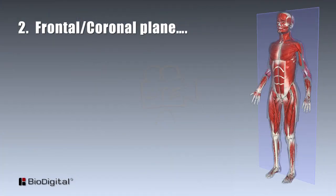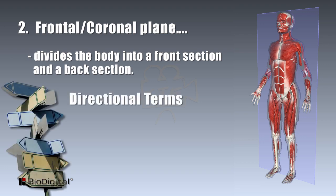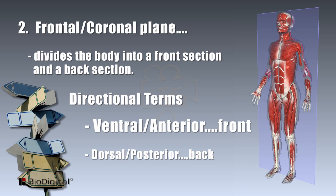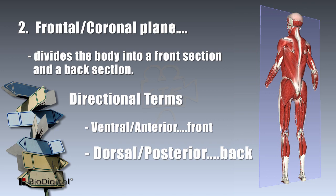The second plane is the frontal or coronal plane. This divides the body into a front section and a back section. Directional terms from this plane are ventral and dorsal. Body parts in the front of the plane are called ventral or anterior, and body parts in the back of the plane are called dorsal or posterior.